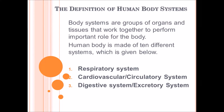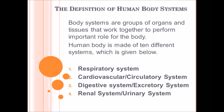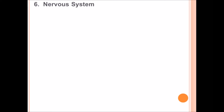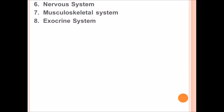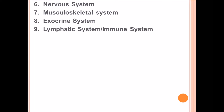Fourth is the renal or urinary system, fifth is the endocrine system, sixth is the nervous system, seventh is the musculoskeletal system, eighth is the exocrine system, ninth is the lymphatic or immune system, and tenth is the reproductive system. Now we will discuss each one in short terms.